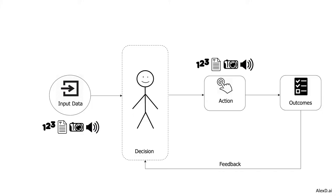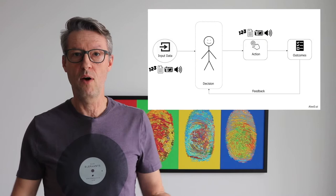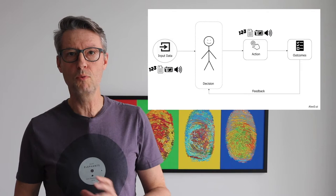Let's view other AI patterns to see if we can find situations to use artificial intelligence. Imagine that you have a bunch of input data — that could be text, image, it doesn't matter. But your action here is to produce new data. For example, you have an article and you want to produce a summary of that article.